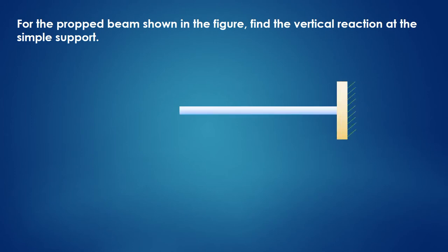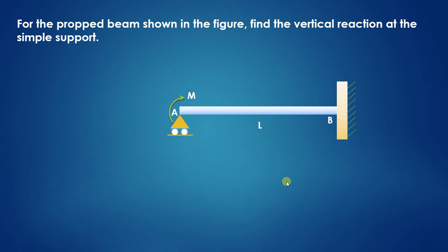First, we will draw the arrangement which is given. As shown here, we have the support at one end, the free end of this particular cantilever beam, and it also carries a clockwise moment. The span length of this beam is L. For this arrangement, we have to find out what the reaction at the support may be.